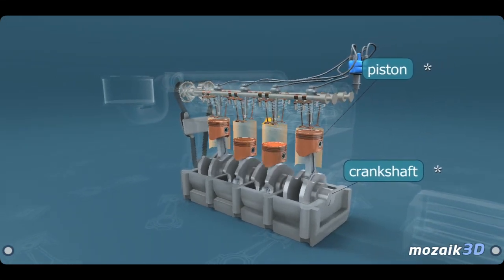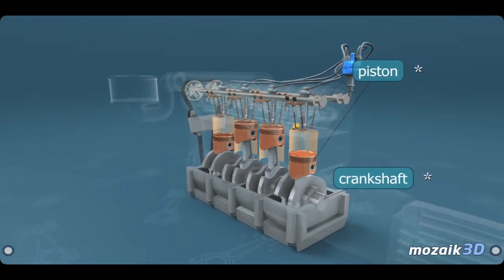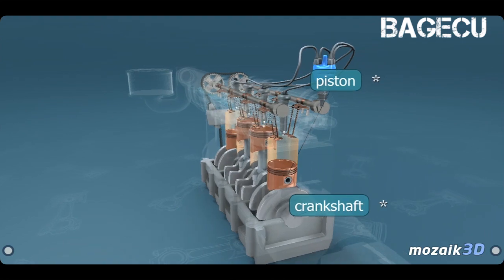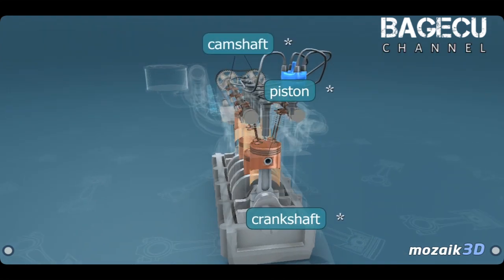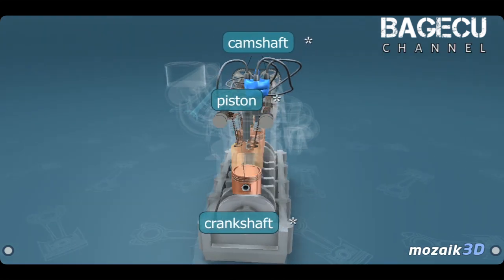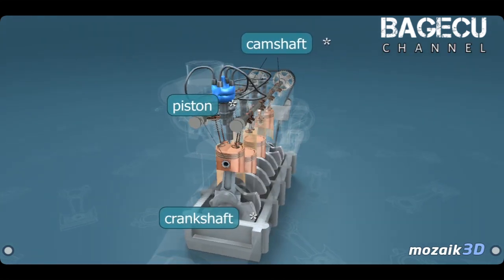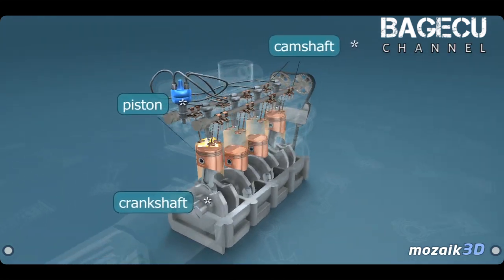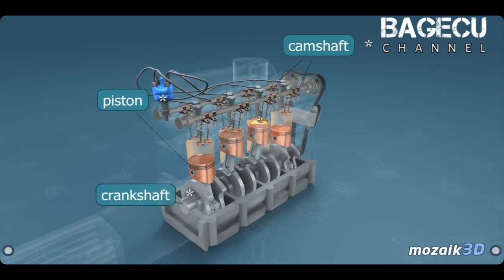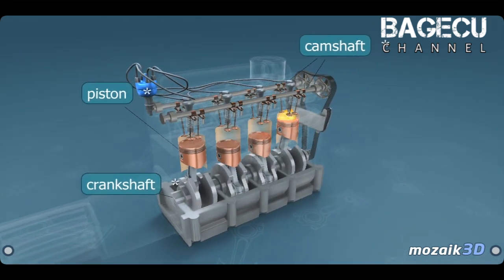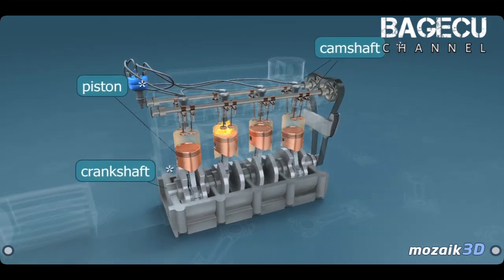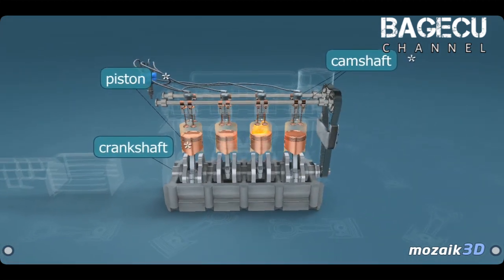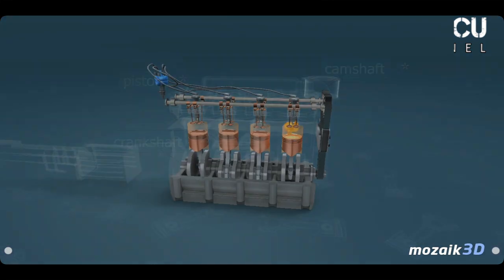The crankshaft drives the drive shaft and the camshaft through the timing belt. The camshaft operates the valves, which ensure fuel intake and the expulsion of exhaust gases through a coordinated rhythmic opening and closing.